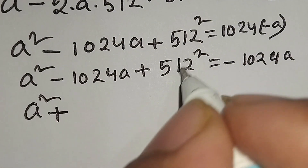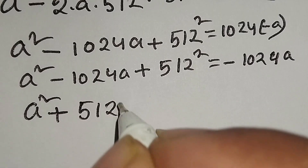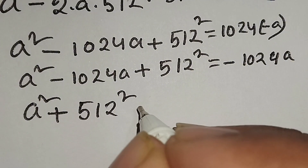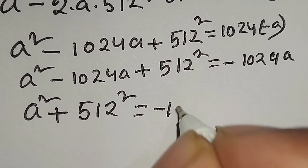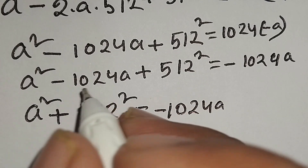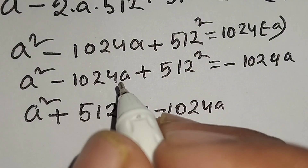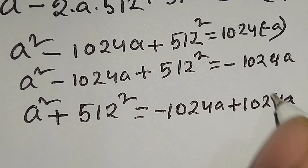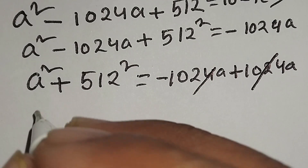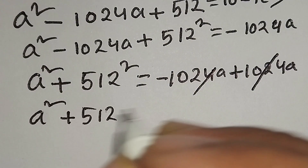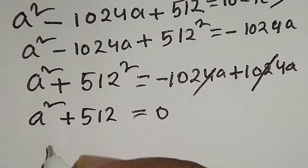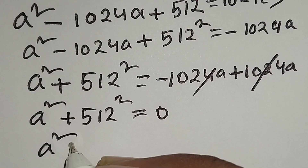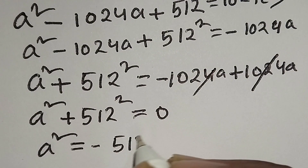We move negative 1024a to the right side, where it becomes positive 1024a. After simplification, the 1024a terms cancel out and we get a squared plus 512 squared equals 0. Taking 512 squared to the right side gives a squared equals negative 512 squared.